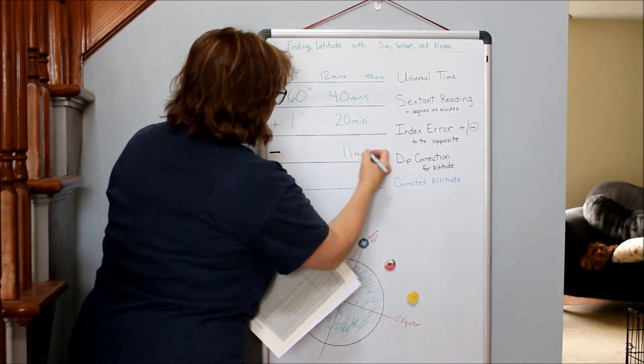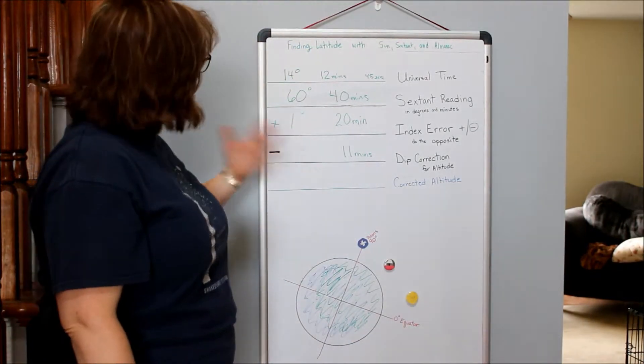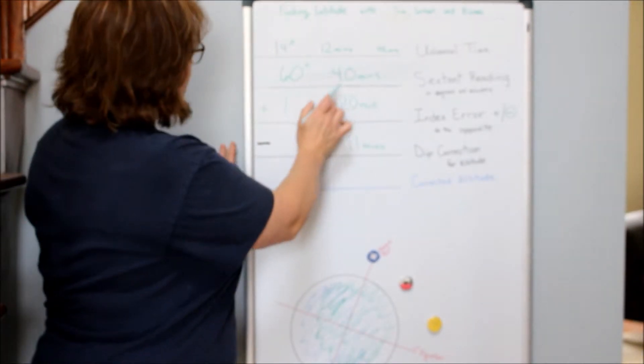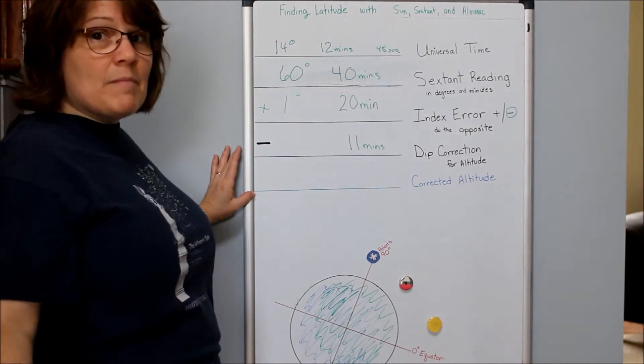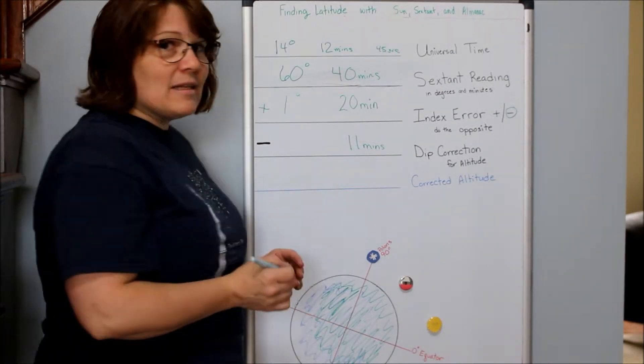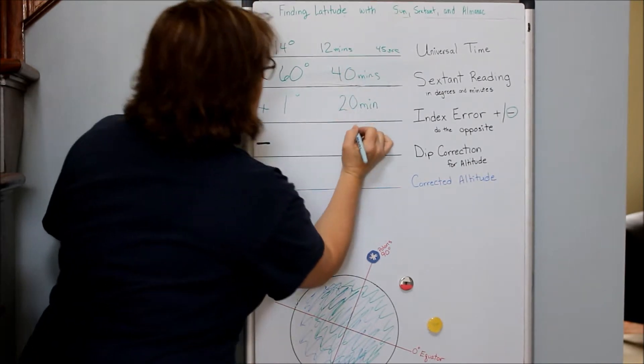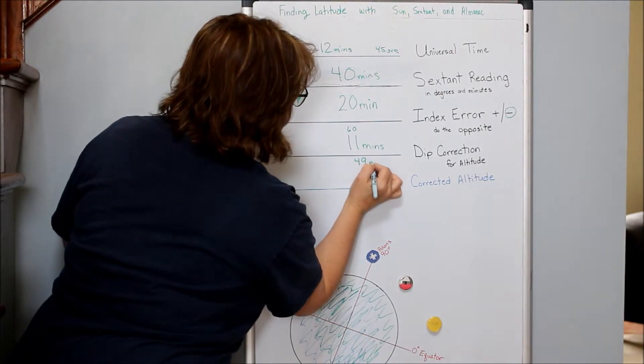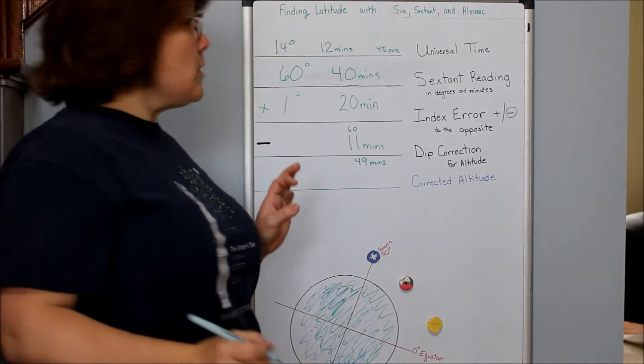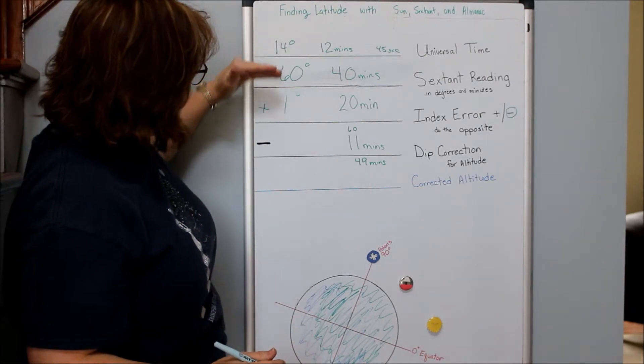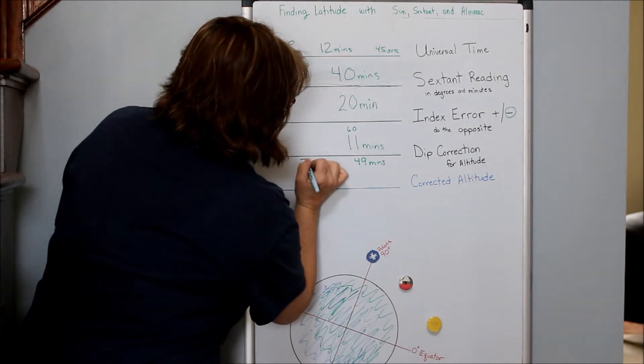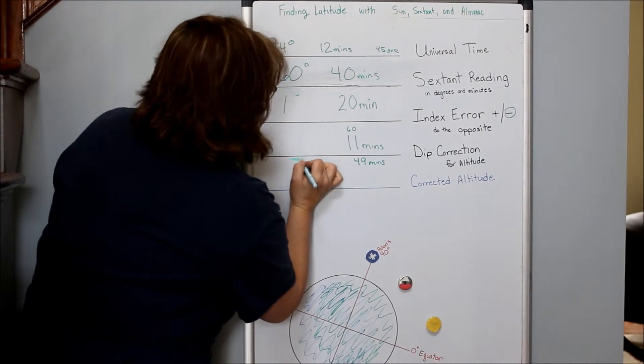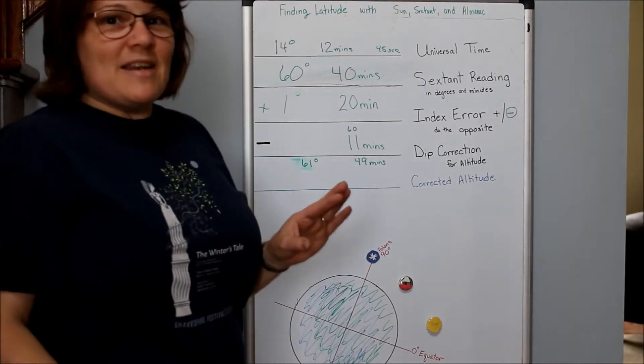Now I can do my math and get my corrected altitude. I've got 40 minutes plus 20 minutes, that's 60 minutes, then minus 11 minutes, so I have 49 minutes for my dip correction. For degrees, 60 degrees plus 1 degree equals 61 degrees.